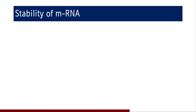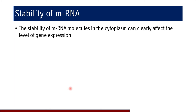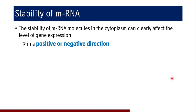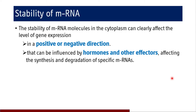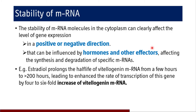The stability of mRNA in the cytoplasm can clearly affect the level of gene expression in a positive or negative direction, influenced by hormones or other effectors affecting synthesis and degradation of specific mRNA. If mRNA is not degraded and remains available, proteins will continue to be synthesized from it; if degraded early, protein synthesis occurs for only a short time. For example, estradiol prolongs the half-life of vitellogenin mRNA from a few hours to more than 200 hours, leading to an enhanced rate of transcription of this gene with a 4 to 6-fold increase in vitellogenin mRNA. Proper circularization of mRNA and its stability are also important for the translation mechanism.